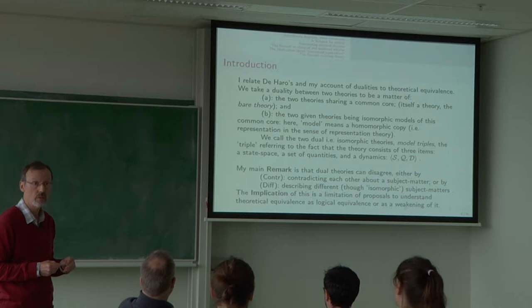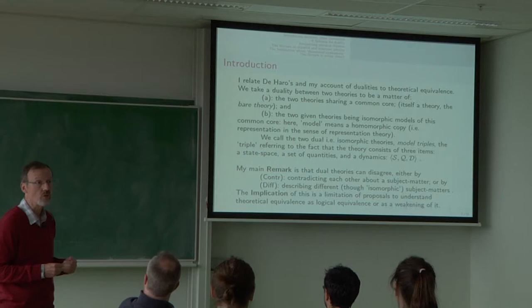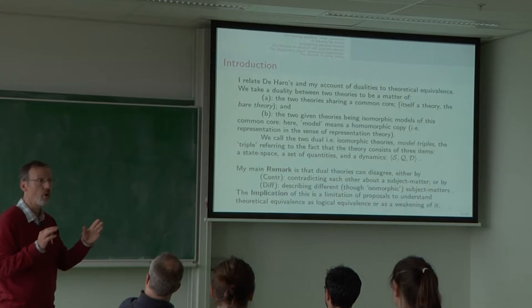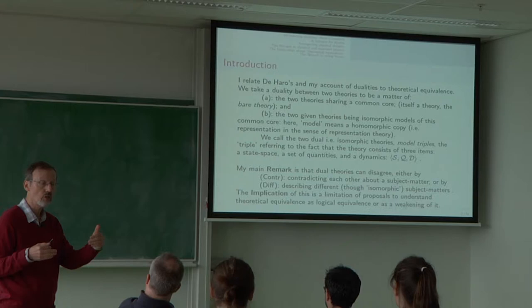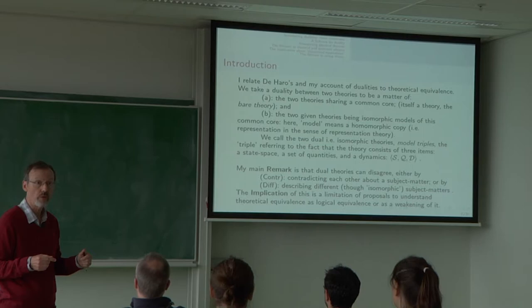And how is that made precise? Namely by there being a common core or bare theory, which they both instantiate or realize or model, where model is a verb. And in particular, we think of it as a homomorphism, so they are homomorphs, or they are representations in the sense of representation theory, in the math sense. They are representations of the common core.